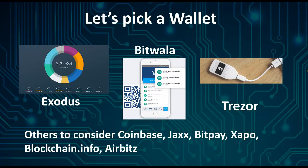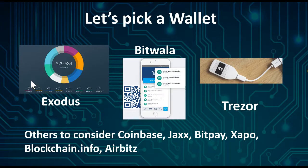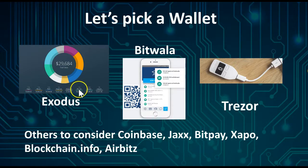Let's pick a wallet — I'll do more individual videos explaining each in more depth; this is just a quick overview. Exodus is a very easy application — you download it to your desktop, super easy and intuitive to use. You can store not just Bitcoin but also Litecoin, Dash, Dogecoin, Ethereum, Decred, Golem, and more. Not just one coin per se.